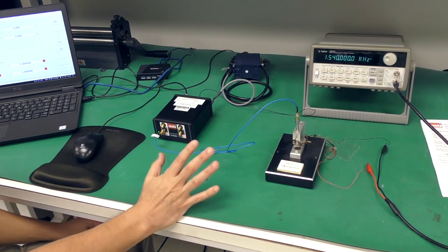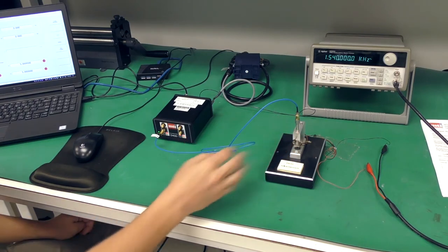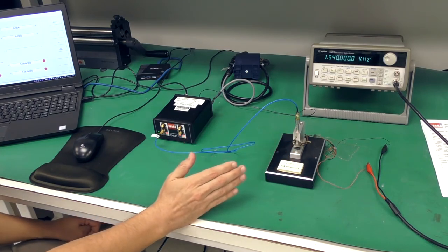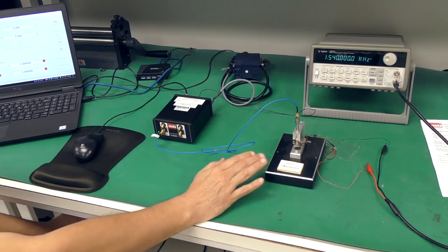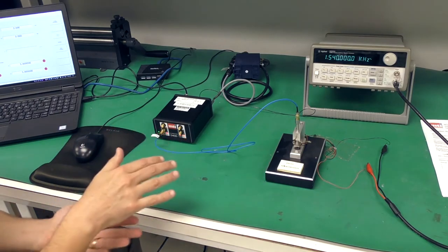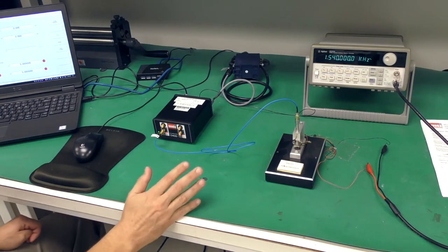The first thing we need to do is gap the probe. This is a 250 micron probe, and in order to measure this accurately, we need to be within its range. So to do that, we look at the software on the computer.